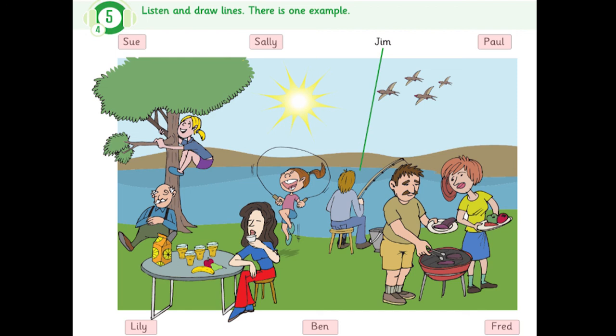5. Can you see Sue? She is skipping. Yes, I can. Is she your cousin? No. She is my sister. She is younger than me.